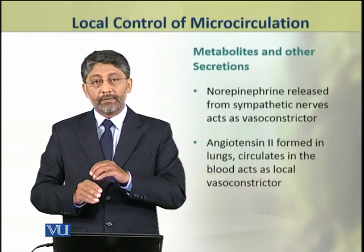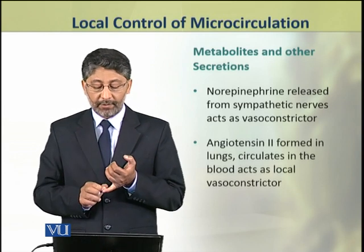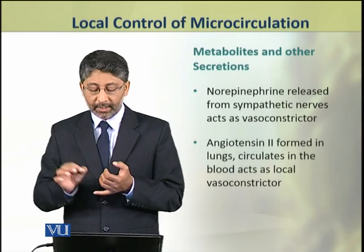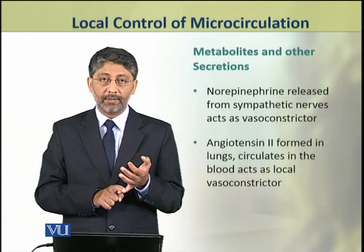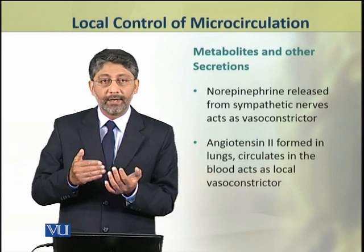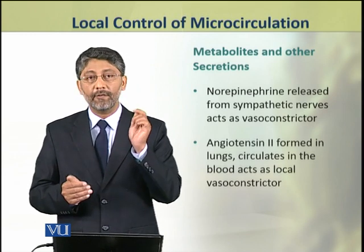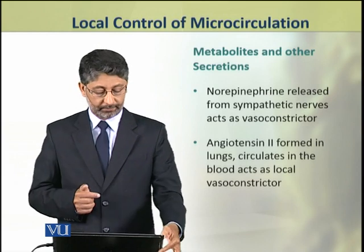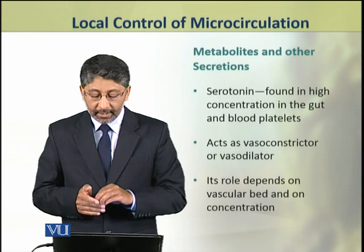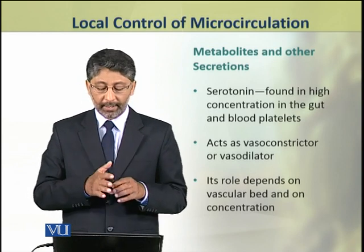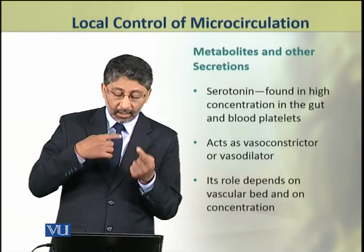Now we shall discuss some other substances. The hormone norepinephrine, which is released from sympathetic nerves, acts as a vasoconstrictor. Angiotensin, which is formed in the lungs, circulates in the blood and acts as a local vasoconstrictor where required. Serotonin, which is found in high concentration in the gut and blood platelets, acts as either a vasoconstrictor or vasodilator.